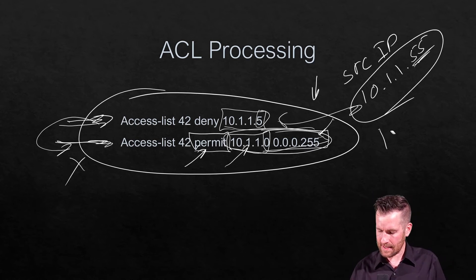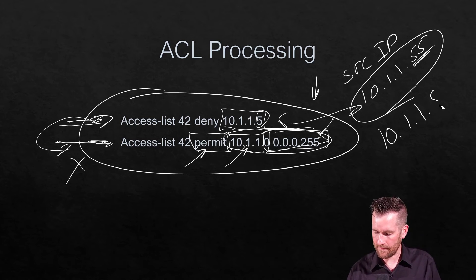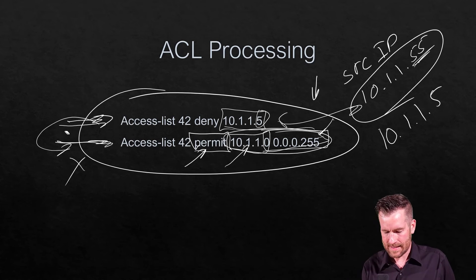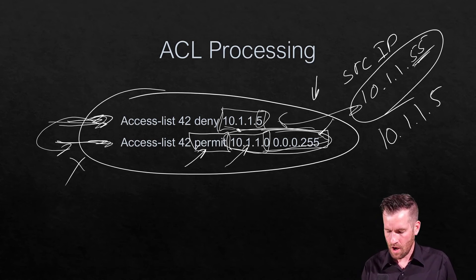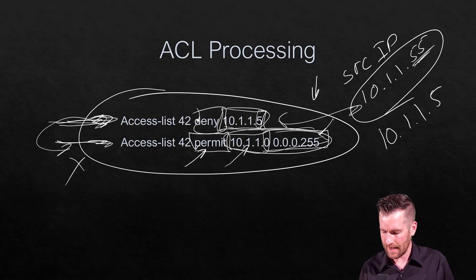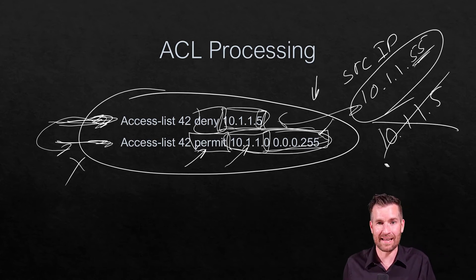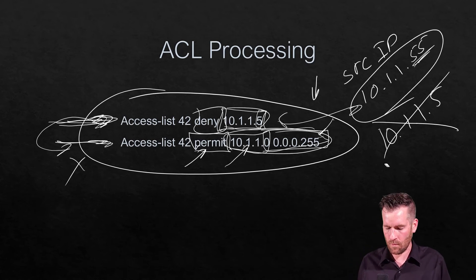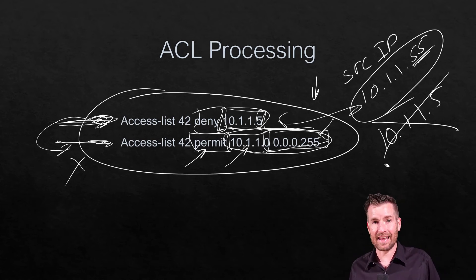If a packet comes in from 10.1.1.5, the ACL evaluates the first statement — 'deny 10.1.1.5' — and it matches. Because it's a deny, the traffic from 10.1.1.5 is not allowed, and the packet is dropped right there.